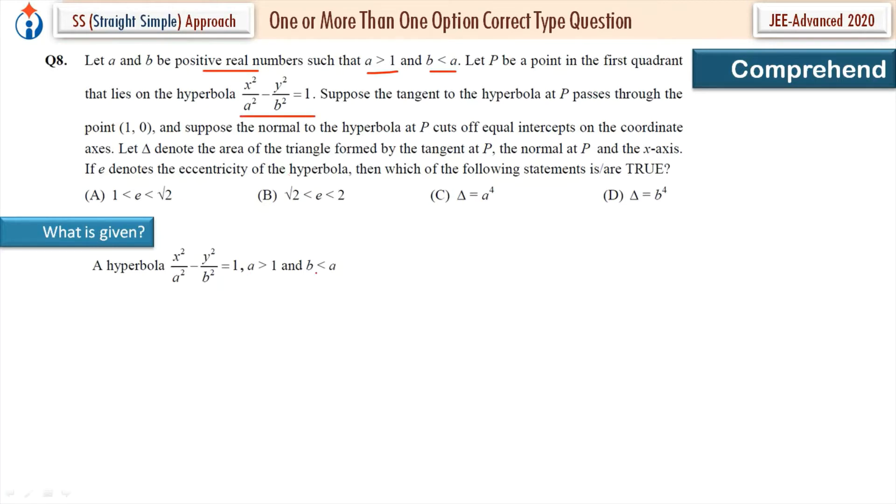A is greater than 1 and B is less than A. Suppose the tangent to the hyperbola at P passes through the point (1, 0). So if point P is in the first quadrant on the hyperbola and tangent to the hyperbola at P passes through the point (1, 0).